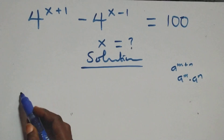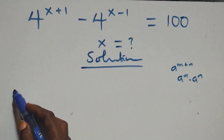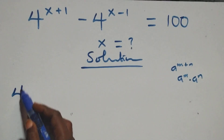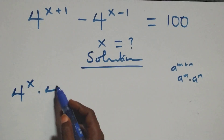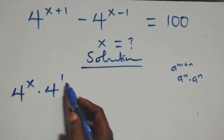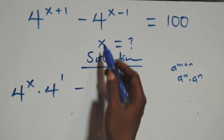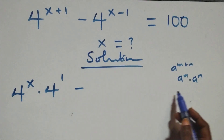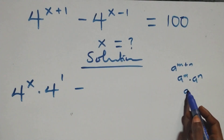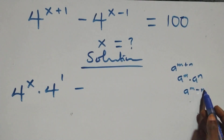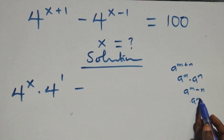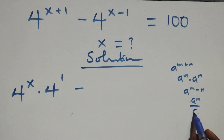At this here we have 4 raised to power x times 4 raised to power 1. Also this follows the law that a raised to power n minus n is the same thing as a raised to power n over a raised to power n.